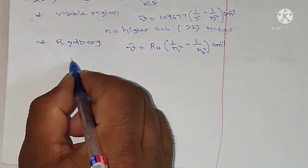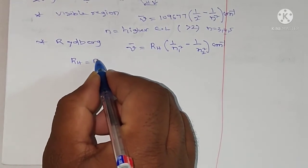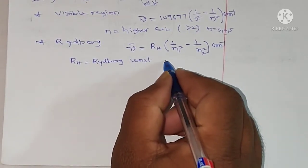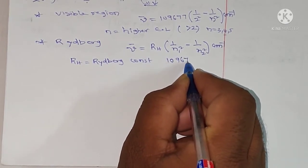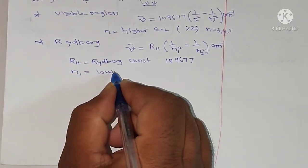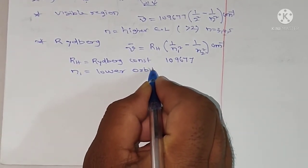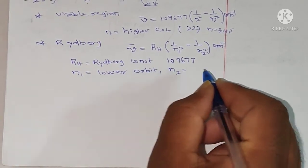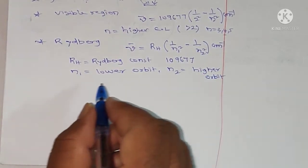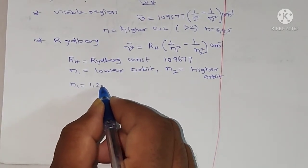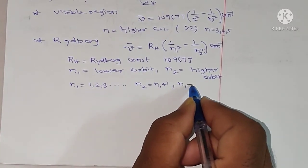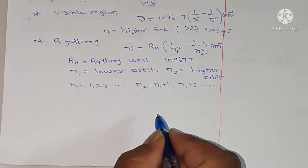Here R_H is equal to the Rydberg constant, and its value is 109,677. n1 is equal to the lower energy level or lower orbit, and n2 is equal to the higher orbit. Here n1 is equal to 1, 2, 3 and so on; and n2 is equal to n1 plus 1, n1 plus 2, and so on.